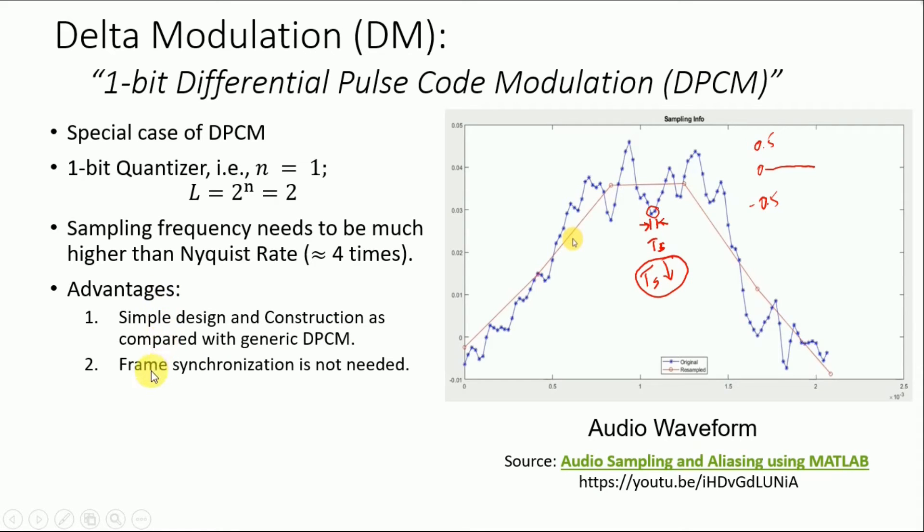And for frame synchronization what we mean is that we need to take into account the most significant bit and the least significant bit so that we do not lose the frame at the transmitter and the receiver because if we do so it would be disastrous.